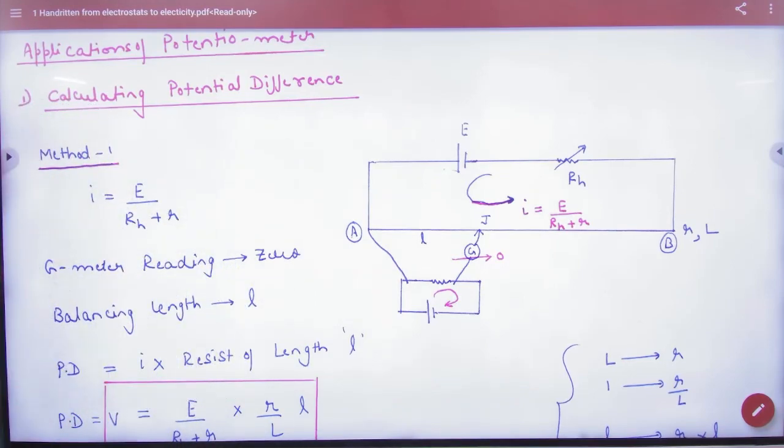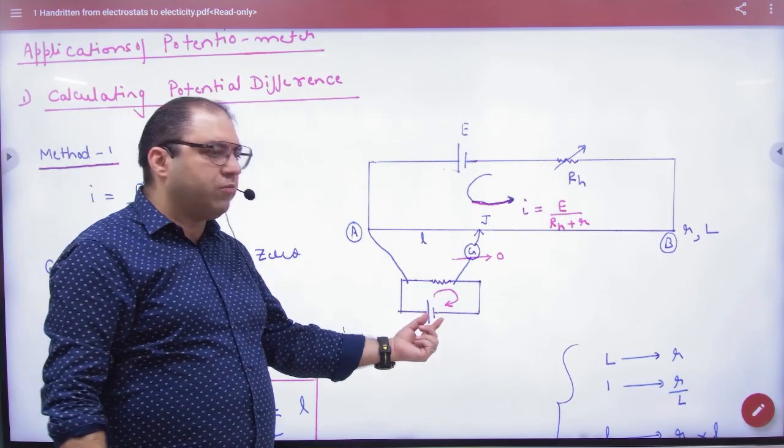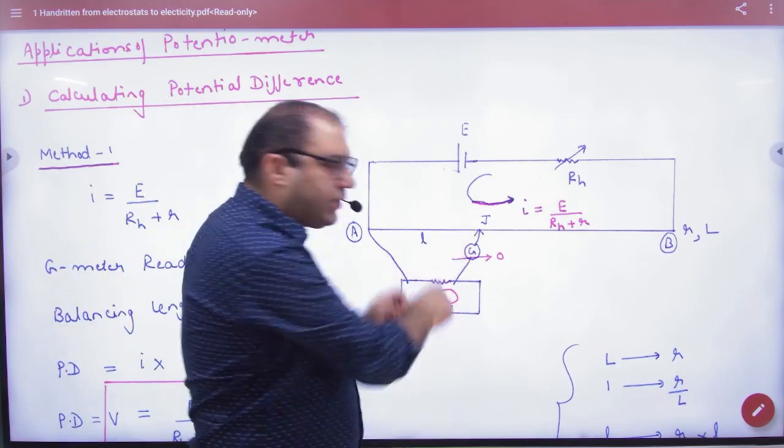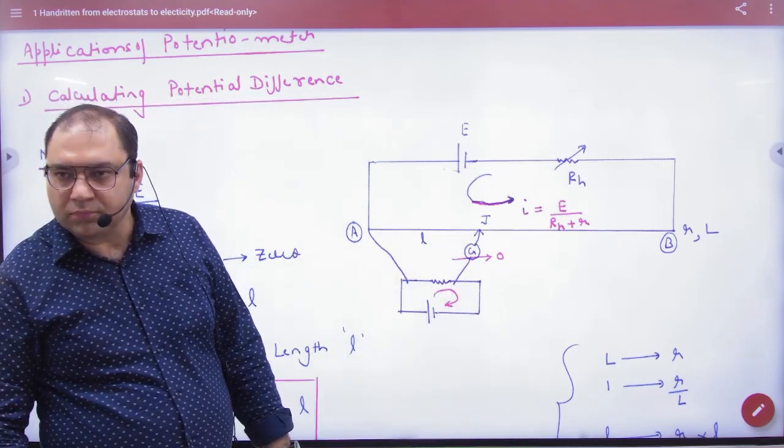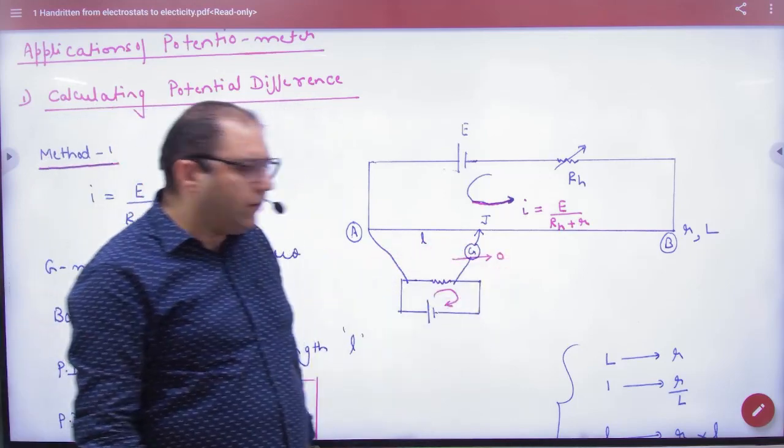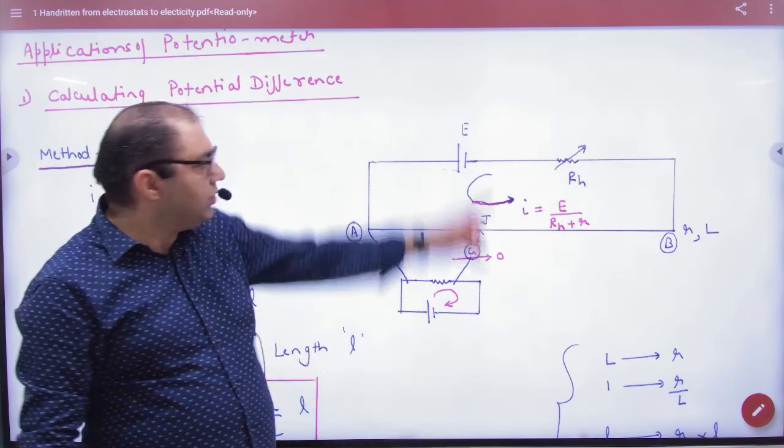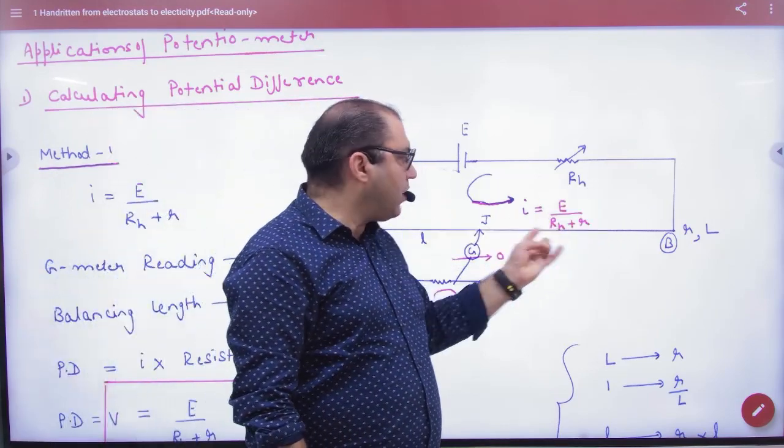So the first topic is if you have a potential difference, then the potentiometer wire is connected here, and it's balanced. Here the current is zero. The resistance wire is small r and length L. The current here is E upon R_h plus R.